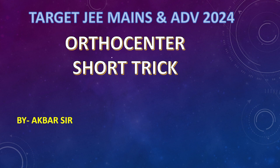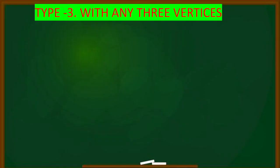How to find the orthocentre of a triangle with any 3 vertices. In the first video, we discussed two types of tricks: first, how to find the orthocentre of a triangle with any one vertex at the origin; and second, how to find the orthocentre of a right-angle triangle. Now in the third type, we will discuss how to find the orthocentre of any triangle with any 3 vertices.